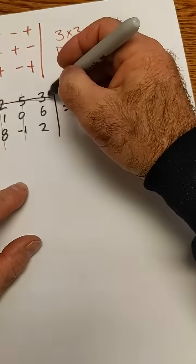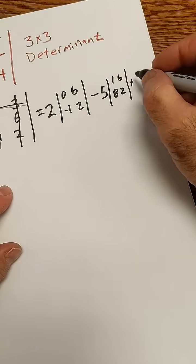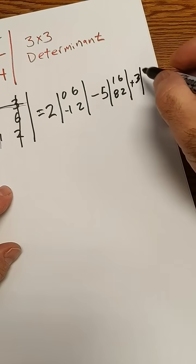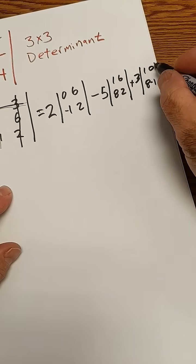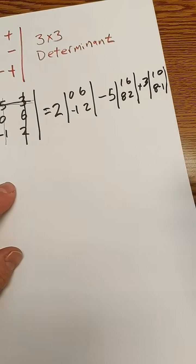Then finally, I cross out this row and this column. It's a plus 3, and I'm left with 1, 0, 8, negative 1. Then treat these as 2x2s and multiply them out.